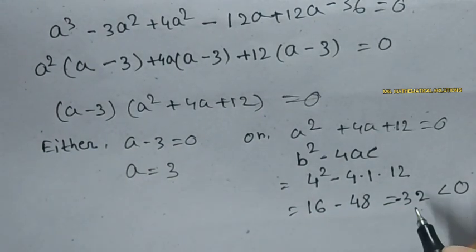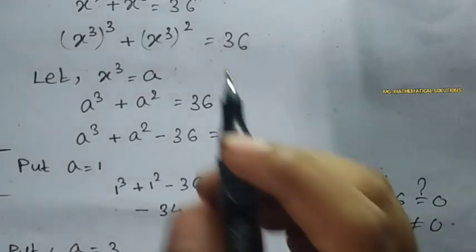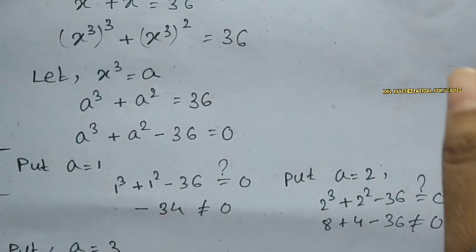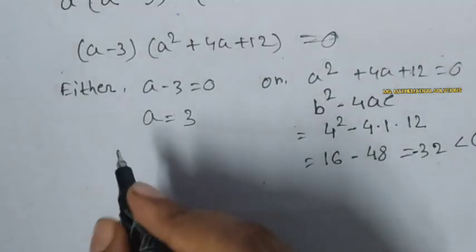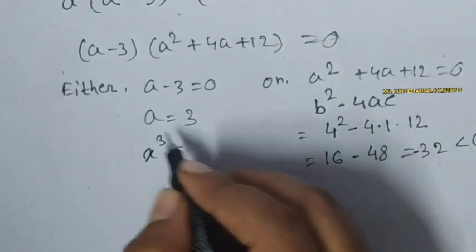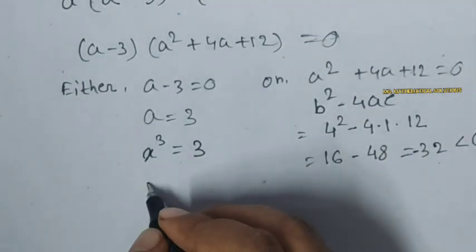Here we say that we do not get any real number, so we put a equal to 3. So first we let x cube equal to a, so we put this value x cube equal to a, a means 3.